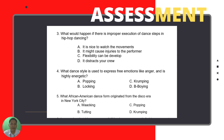Number five: What African-American dance form originated from the disco era in New York City? Is it A — waacking; B — tutting; C — popping; or D — cramping?